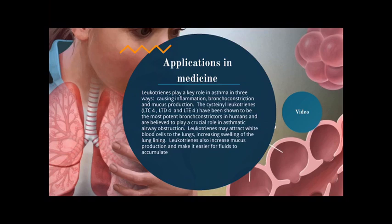First, causing inflammation. Second, bronchoconstriction. And third, inducing the production of mucus. The cysteinyl leukotrienes LTC4, LTD4, and LTE4 have been shown to be the most potent bronchoconstrictors in humans and are believed to play a crucial role in asthmatic airway obstruction.